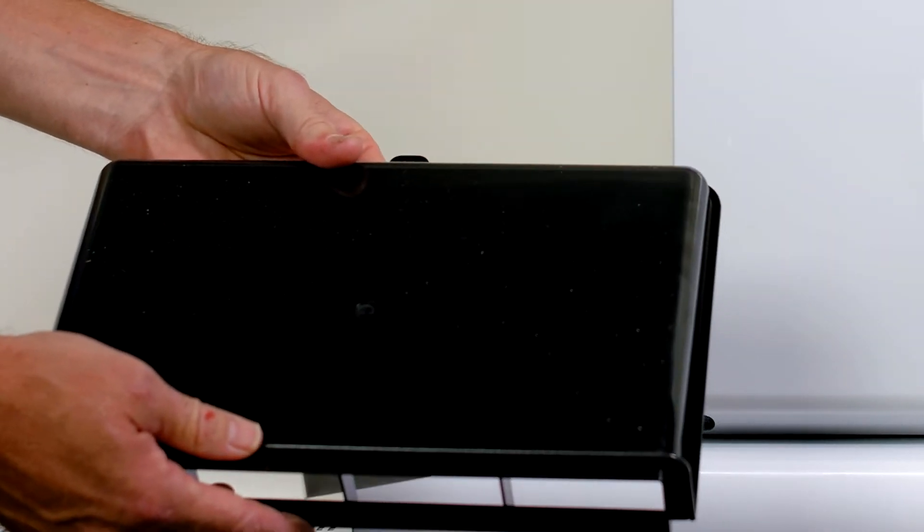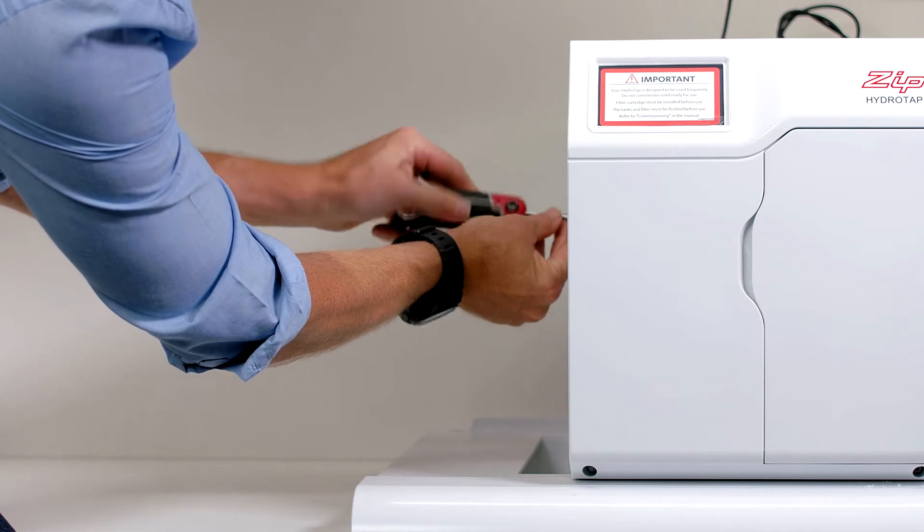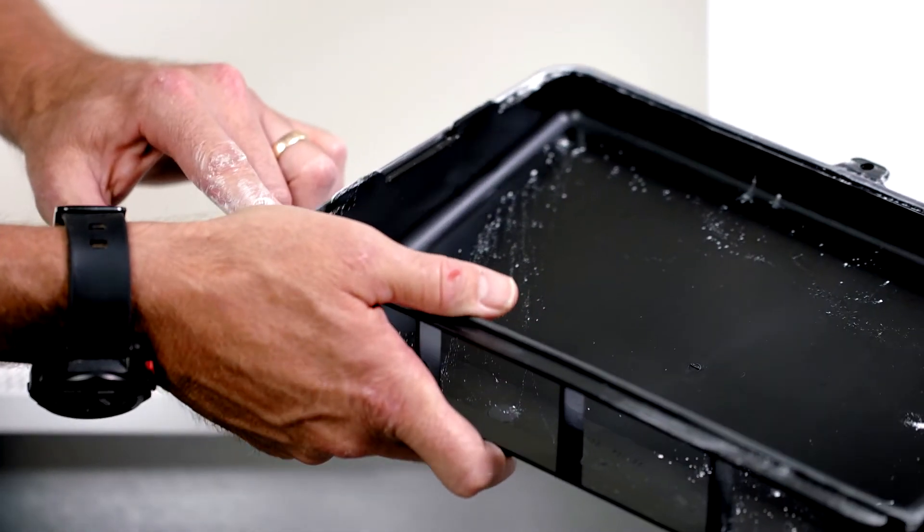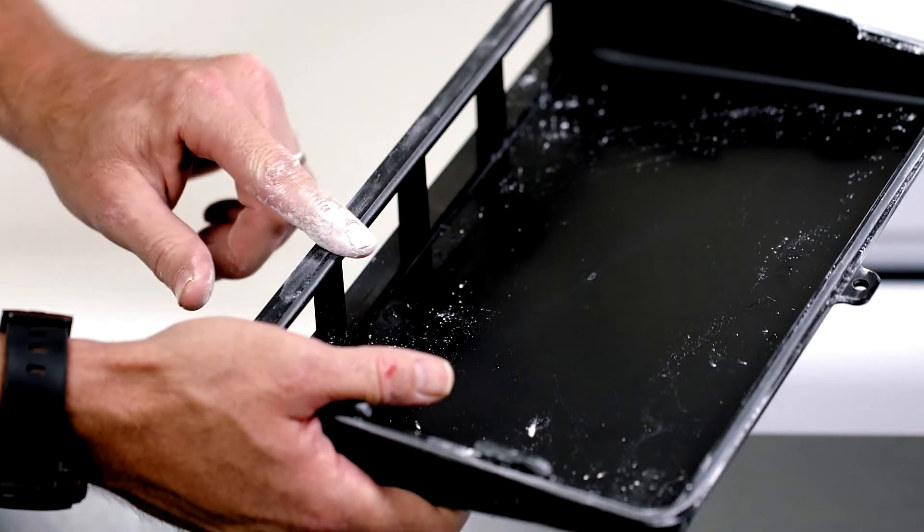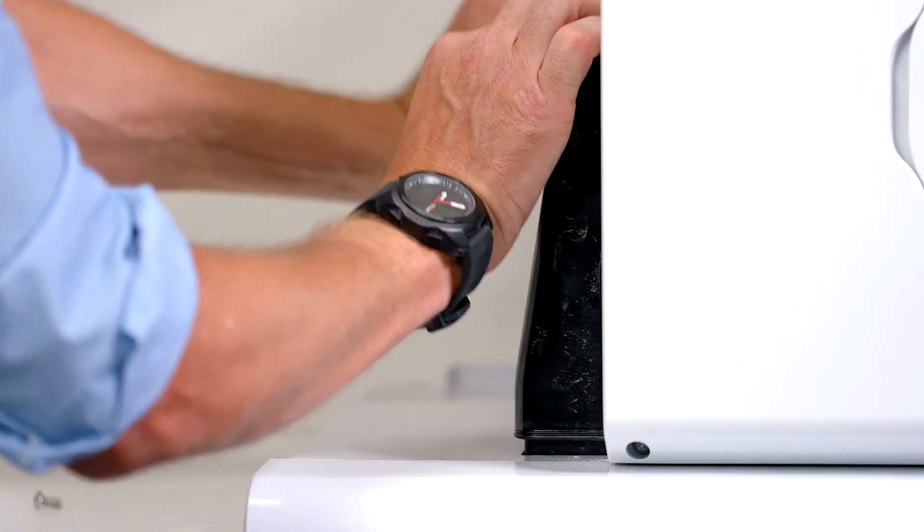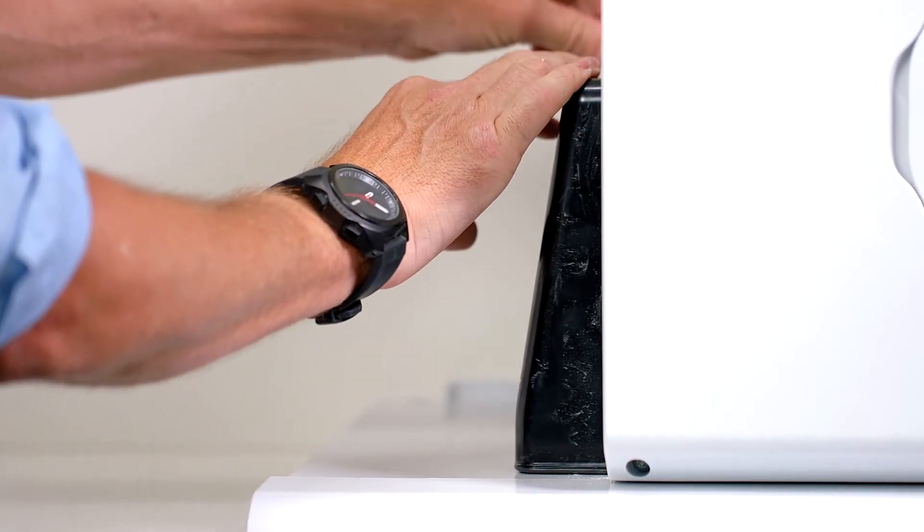Fit the outlet duct to the side of the command center. As the duct seal is new, fitting to the unit can be hard. Use the supplied talcum powder to make the fitment easier. Just gently apply a small amount of the powder around the seal and secure the duct with the screw found on the side of the command center.